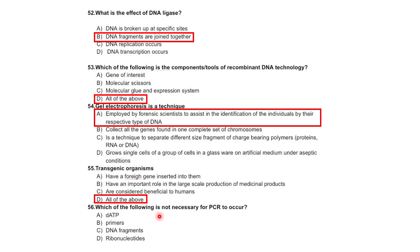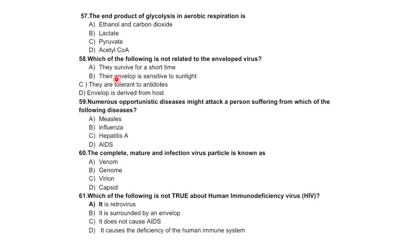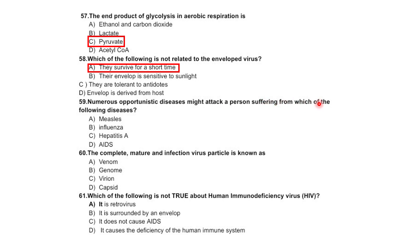Which of the following is not necessary for PCR to occur? Regarding enveloped viruses: they survive for a short time, their envelope is sensitive to sunlight, they are tolerant to antibiotics, or the envelope is derived from the host — correct option is they are tolerant to antibiotics.